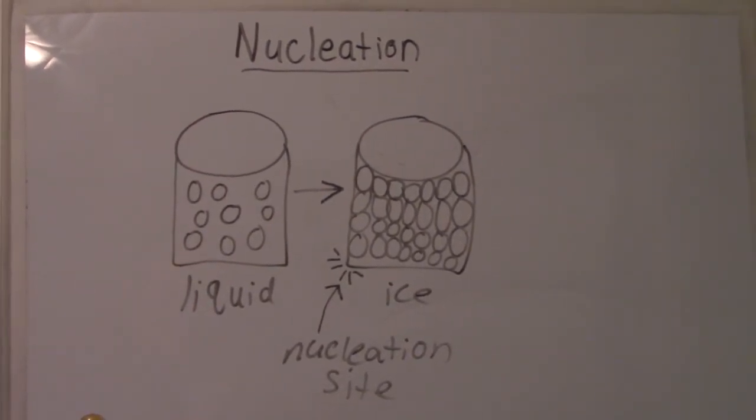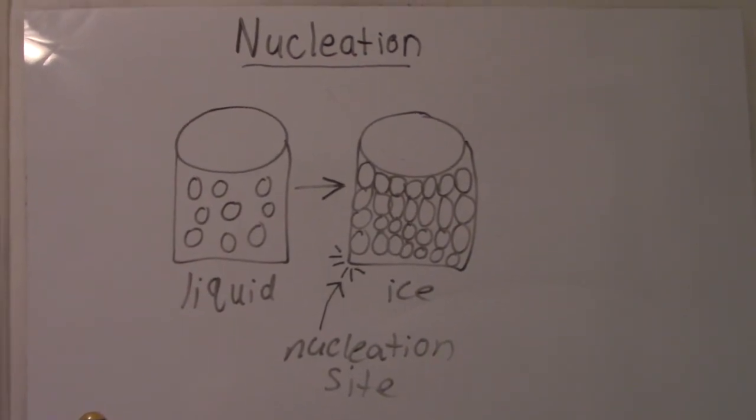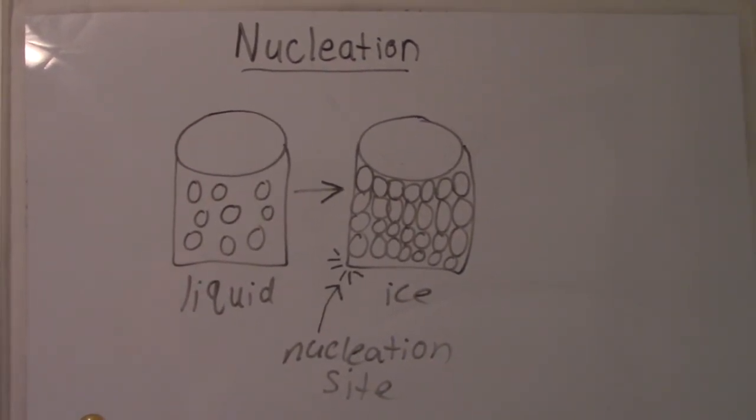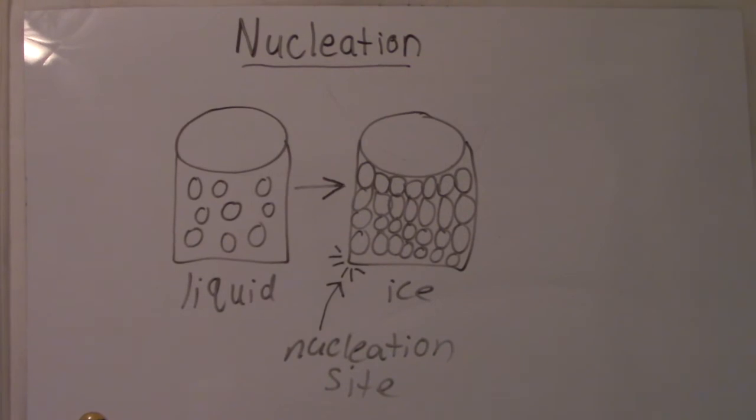By tapping or hitting the supercooled bottled water, it creates a nucleation site. This forms a chain reaction where the molecules start to bond together, making the water turn into ice.